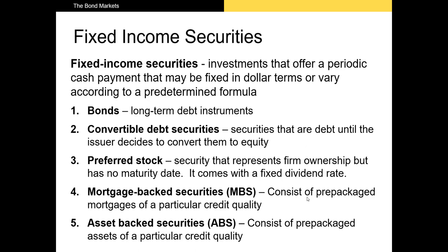In addition to bonds, we also have convertible debt securities — just debt until the issuer decides to convert them to equity or shares of stock. The rate at which convertible debt can be converted into stock is specified when the debt is issued. In the fixed income securities marketplace, we can also see preferred stock. Preferred stock represents an asset that pays a specific dividend that doesn't increase or decrease. A firm can suspend the preferred stock dividend, but it has to pay back all missed dividends to preferred shareholders before paying dividends to common shareholders. Next, we have mortgage-backed securities and asset-backed securities. MBSs and ABSs are fairly similar, except one is backed by mortgages and the other by some other assets.